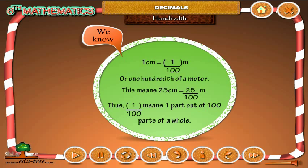We know 1cm is equals to 1 by 100m or one hundredth of a meter. This means 25cm is equals to 25 by 100m. Thus 1 by 100 means 1 part out of 100 parts of a whole.